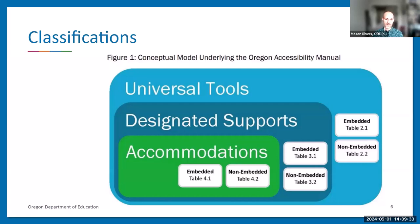Accommodations are available for students who experience disability and have a documented need in their IEP or 504 plan. Students who receive accommodations may also access designated supports and universal tools. Additionally, supports are classified as embedded — provided within the assessment platform — and non-embedded, provided outside it. Non-embedded examples include a physical calculator, testing in a separate setting, or a human reader.